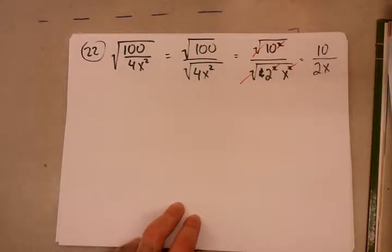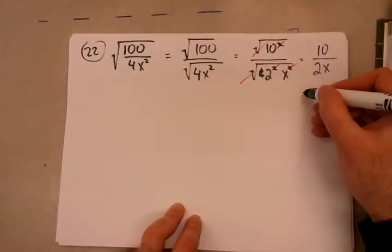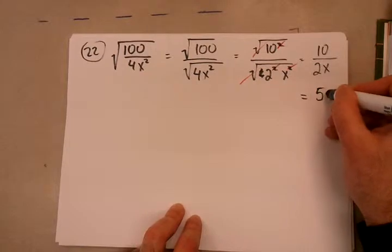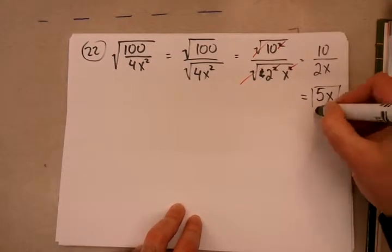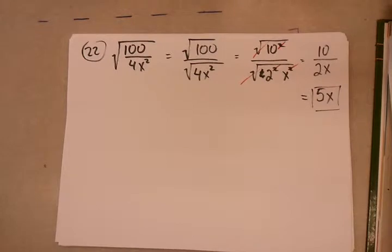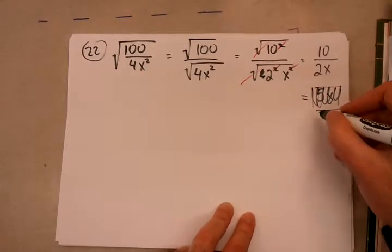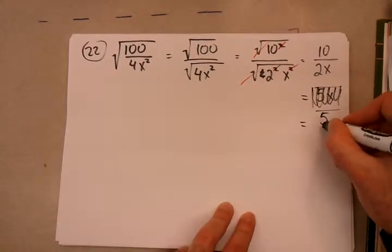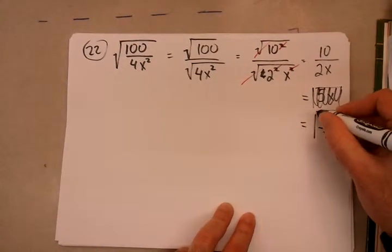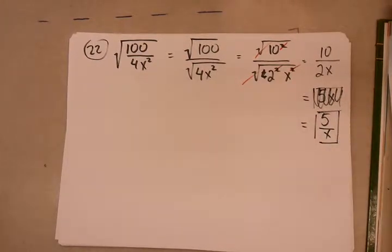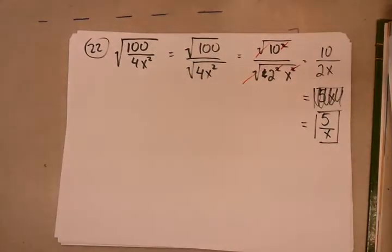Now if you left it like this, you would be fine. But you can simplify this further. 10 divided by 2 is a 5. So that would be the simplest form. Done. Oh, I'm sorry. That would be a 5 over x. Sorry. Not a 5x. The x stays in the denominator. My bad. So that's 22. Pretty simple again, mostly because everything was a perfect square. They all just cancelled their root out.